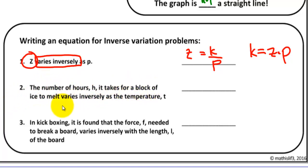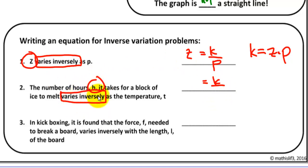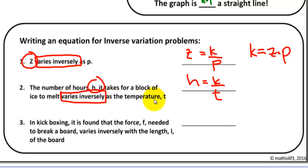Example number 2: the number of hours it takes for a block of ice to melt varies inversely as the temperature. 'Varies inversely' means equal to K divided by something. The variable before is H — that's the number of hours — so write H before the equal sign. The variable after, which is the temperature T, will be your denominator. This makes sense: during summer the temperature is very high and it takes only a few minutes to melt a block of ice, whereas during winter the temperature is very low and you need more time. To solve for K, multiply H times T.